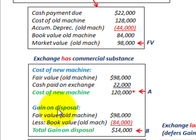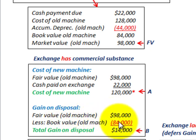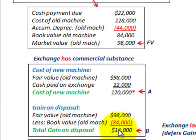Next, we determine the gain on disposal. We take the fair value of the old machine less its book value. The difference between the fair value and the book value gives us our gain on disposal of $14,000. This matches the first step in our exchange rules: fair value less book value gives any gain or loss — and in this case it's a gain, since fair value is greater than book value.